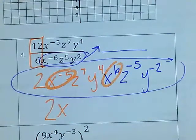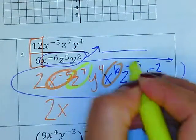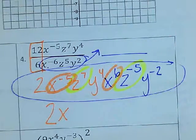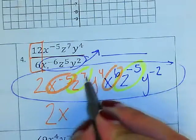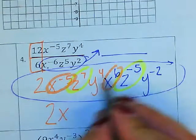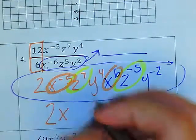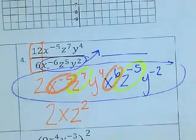The 2 is still there. And then I'm going to do the z. When I multiply z to the 7th times z to the negative 5th, I add the exponents. So 7 minus 5, or 7 plus negative 5, will give me z to the 2nd power.